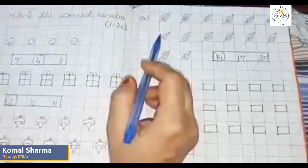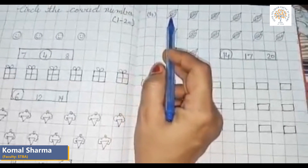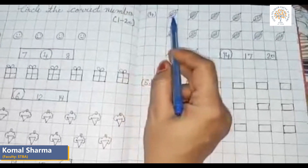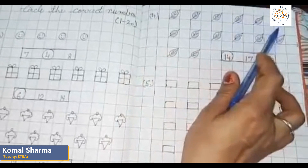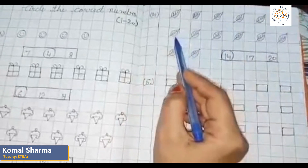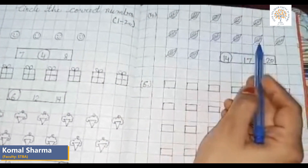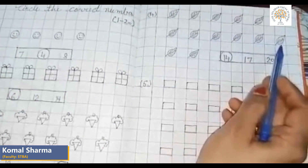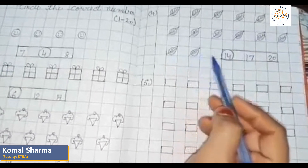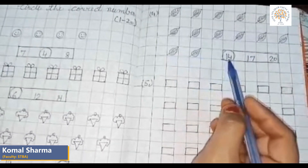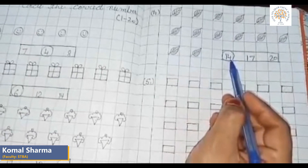Now we count leaves. How many leaves are there? One, two, three, four, five, six, seven, eight, nine, ten, eleven, twelve, thirteen, fourteen. There are fourteen leaves. So we will circle the number fourteen.